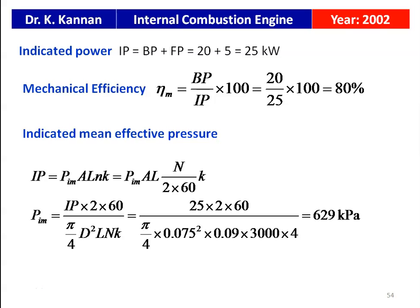The mechanical efficiency equals BP / IP × 100 = 20 / 25 × 100 = 80 percent. For the indicated mean effective pressure, IP = Pim × A × L × n × k, where small n = N/2 for a 4-stroke engine. So Pim = IP × 2 × 60 / [(π/4)d² × L × N × k] = 25 × 2 × 60 / [(π/4) × 0.075² × 0.09 × 3000 × 4] = 609 kilo Pascals.